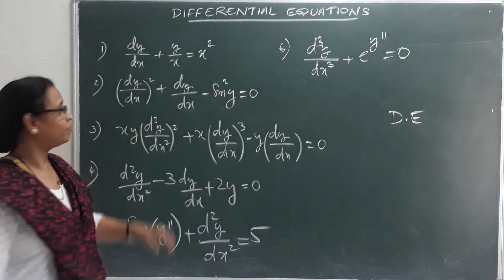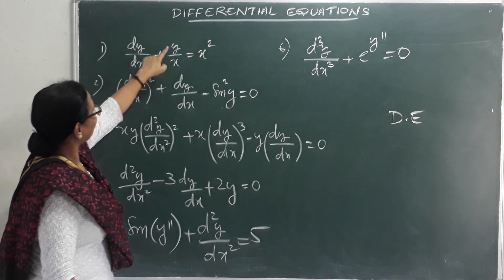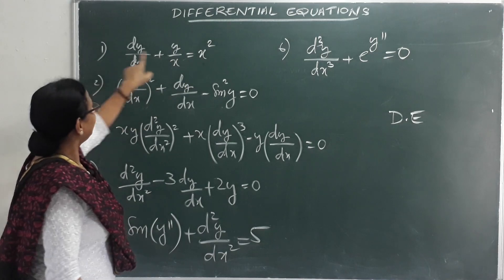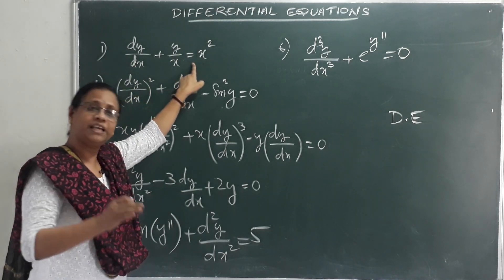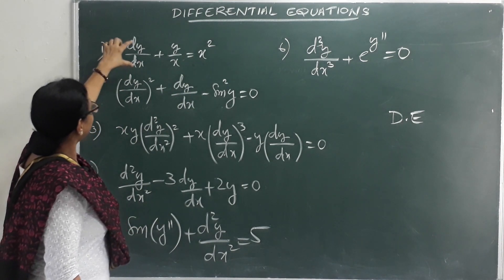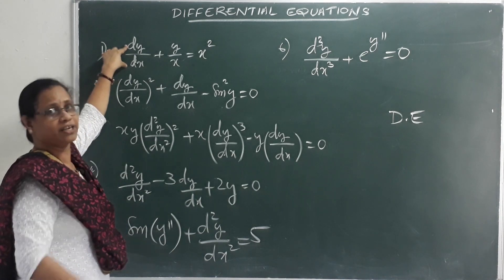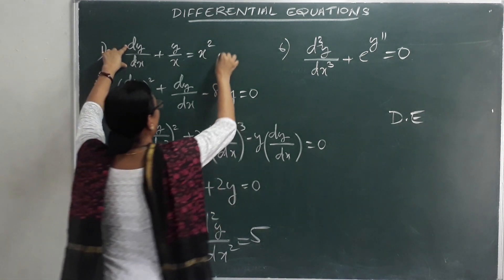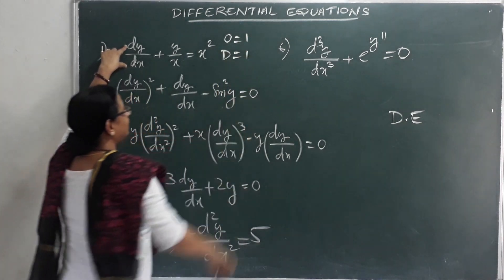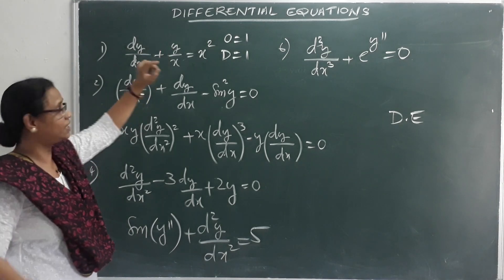The first question is: dy/dx + y/x = x². What is the order and what is the degree? The highest derivative here is dy/dx. The order is 1. Since the power of dy/dx is 1, the degree is also equal to 1.